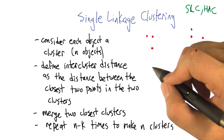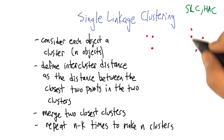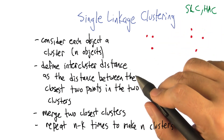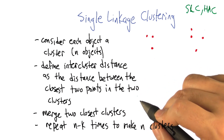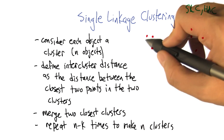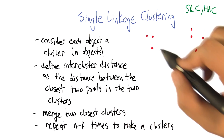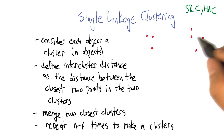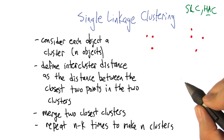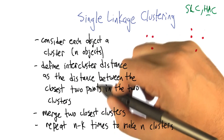Here's what we're going to do. We're going to consider each object a cluster to start. We start off with n objects like we have here — seven of them. We're going to define the inter-cluster distance as the distance between the closest two points in the two clusters. In the beginning, all the points are in their own clusters, so the inter-cluster distance is exactly the inter-object distance. But little by little, we're going to be aggregating things into larger clusters, and the closeness between two clusters is the closeness of the closest two points between those two clusters.